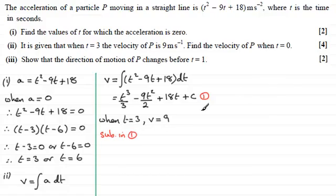And if we do that, we've got for v, it's going to be 9. So therefore, 9 equals t cubed over 3, so it's going to be 3 cubed over 3, minus 9t squared over 2, so it's going to be 9 times 3 squared divided by 2, plus 18t, so that'd be plus 18 times 3, and then plus the constant of integration c.